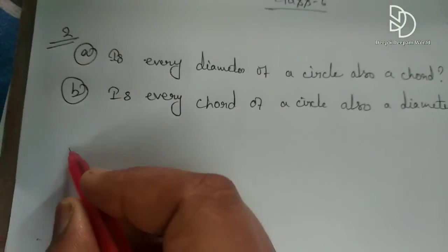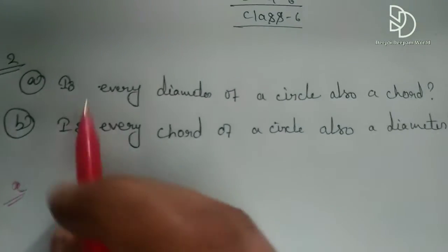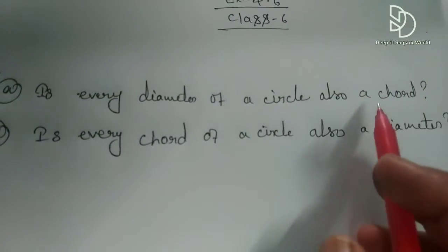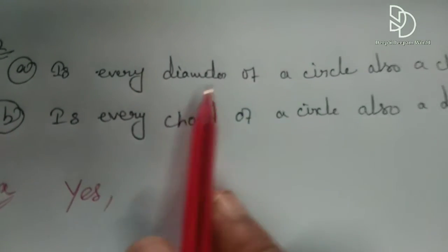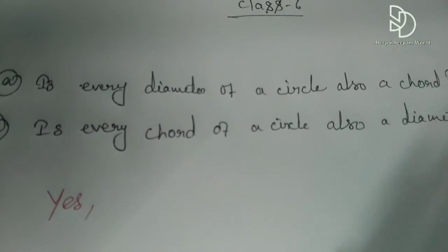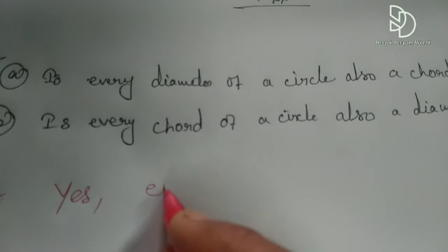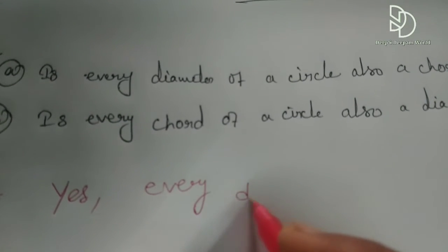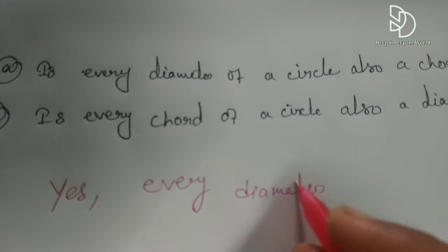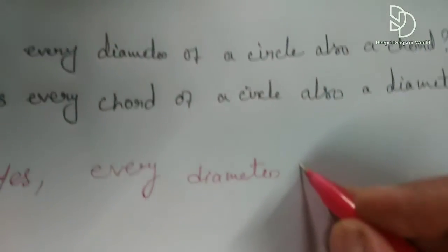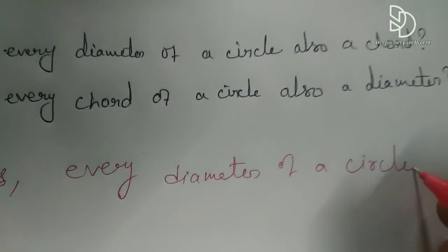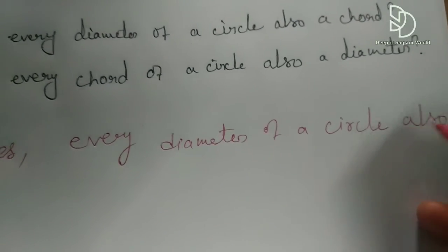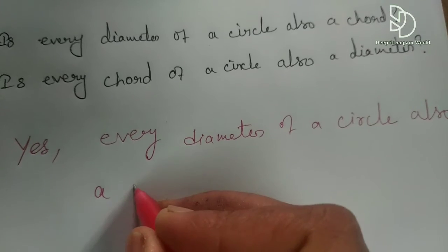What will be the answer? Is every diameter of a circle also a chord? The answer is yes, okay? Because the diameter of a circle is also a chord. So yes, every diameter of a circle is also a chord.